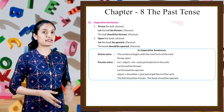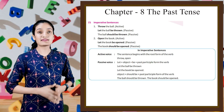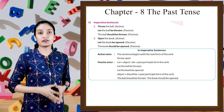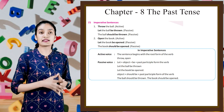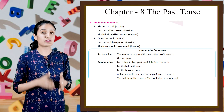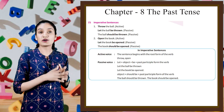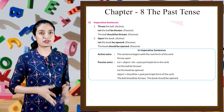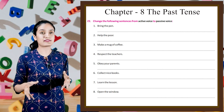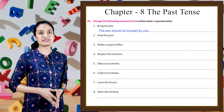Next is imperative sentences. 'Throw the ball' (active) — 'Let the ball be thrown' or 'The ball should be thrown' (passive). 'Open the book' (active) — 'Let the book be opened' or 'The book should be opened' (passive). In imperative sentences, active voice begins with the root form of the verb — throw, open. Passive voice uses: 'Let' plus object plus 'be' plus past participle, or object plus 'should be' plus past participle. Example: 'Bring the pen' becomes 'The pen should be brought by you.' Change the following sentences by yourself.